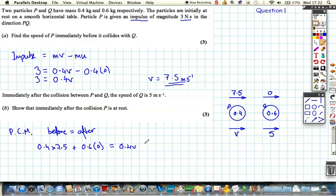So it's 0.4V plus 0.6 times 5. So we can solve this out, and we find out that 0.4 times 7.5 is 3, is equal to 0.4V plus 3. So when we subtract 3 from both sides, we get the equation 0.4V is equal to 0, and therefore we find out that V is 0 ms minus 1.